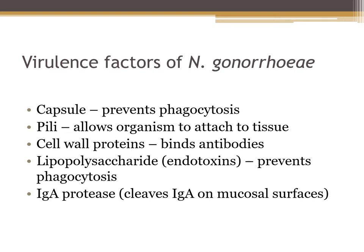Neisseria gonorrhoeae has a number of virulence factors. It has a capsule, which prevents the body from phagocytizing it. It also has pili, which allow the organism to attach to tissues — it's very efficient at attaching to the mucosa of the endocervix and urethra. It has cell wall proteins 1, 2, and 3 that bind antibodies and prevent phagocytosis, lipopolysaccharides or endotoxins that also prevent phagocytosis, and it produces the enzyme IgA protease which cleaves the IgA molecule and compromises secretory IgA mucosal immunity.